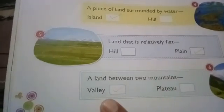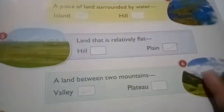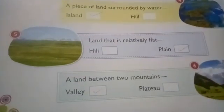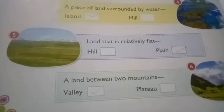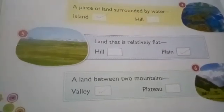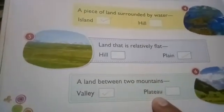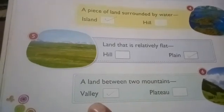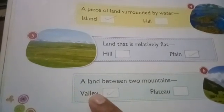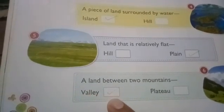Now come to the sixth: a land between two mountains — there are two mountains and the land between them is known as valley or plateau? That one is valley. So tick at that option. Complete this chapter in your book and revise this also.